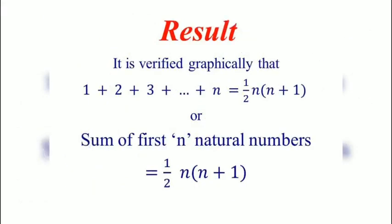We got the result from this activity that it is verified graphically that 1 plus 2 plus 3 up to plus 10 is equal to half n into n plus 1, or sum of first n natural numbers is equal to 1 by 2 n into n plus 1.